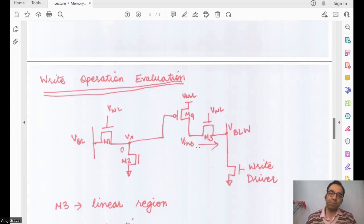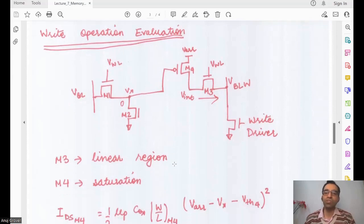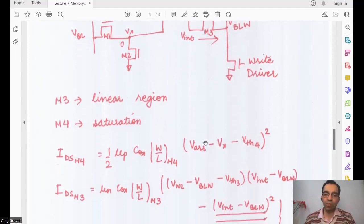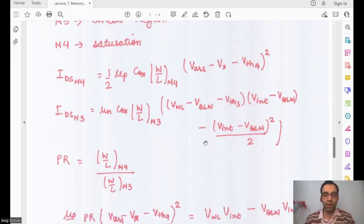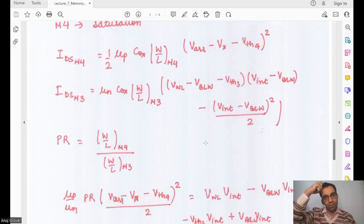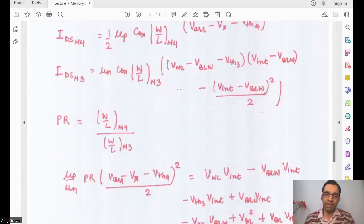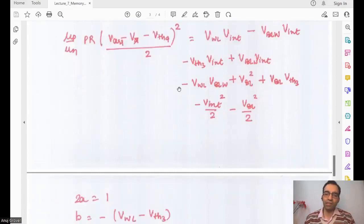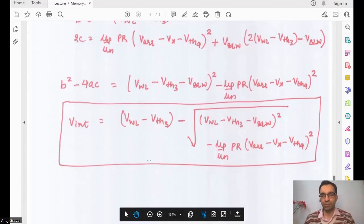So now again, we simply do the Kirchhoff's law. We simply apply Kirchhoff's law. We say the current coming from M4 has to be sunk by the write driver. And the current going from M3 has to also discharge VInt. So IDSM4 and IDSM3 equations are written. We define just like we had defined cell ratio there, we define pull-up ratio there. The size of the M4 is the pull-up upon the size of the pass gate. And we again arrive at the quadratic equation. When we solve the quadratic equation, this is what we get.